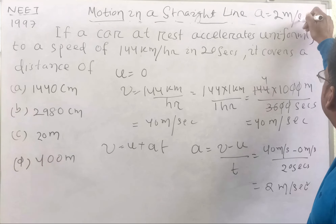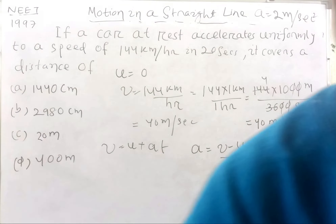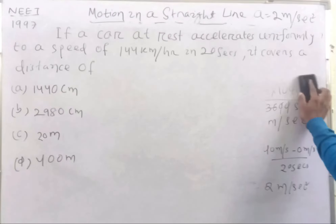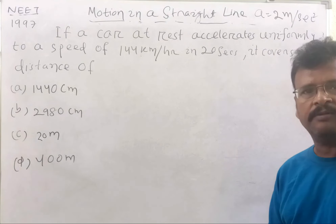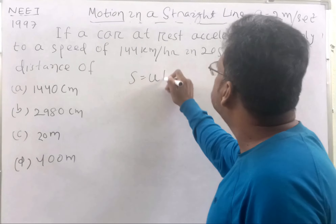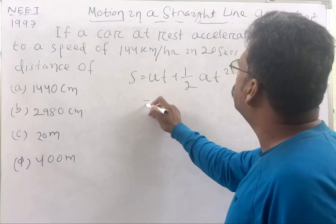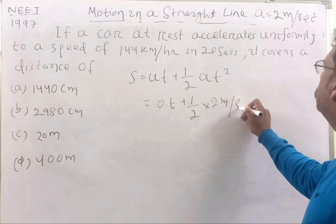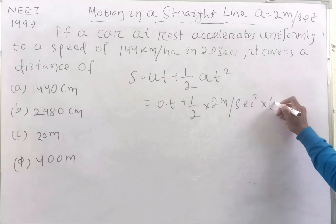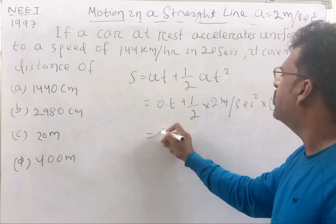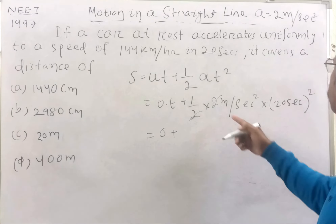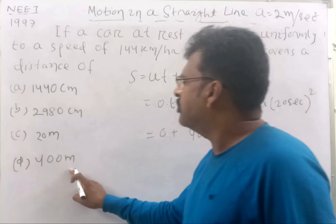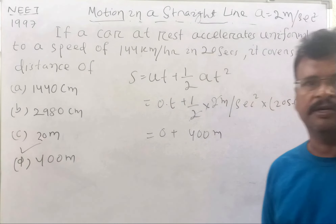Using the equation s = ut + ½at², with u = 0, a = 2 m/s², and t = 20 seconds: s = 0 + ½ × 2 × (20)² = 1 × 400 = 400 meters. So the answer is option B — 400 meters.